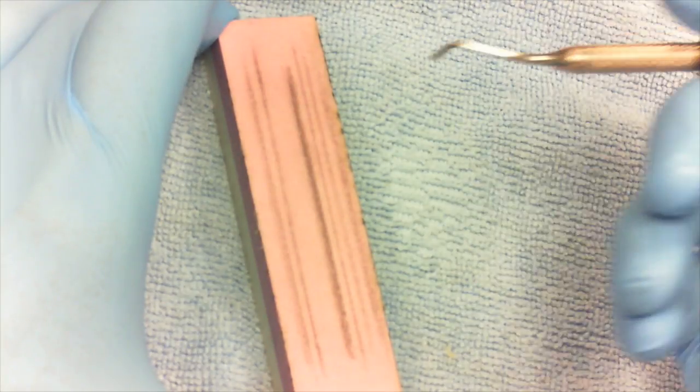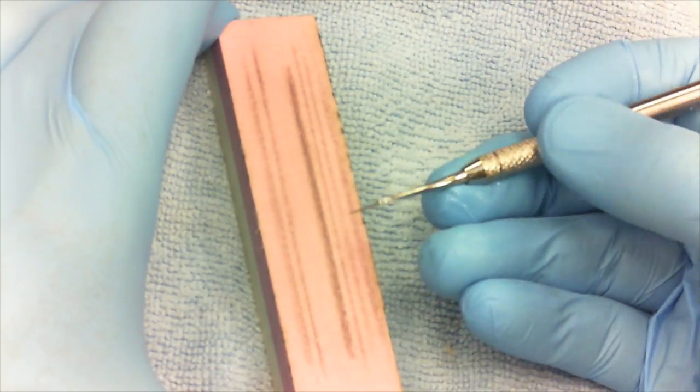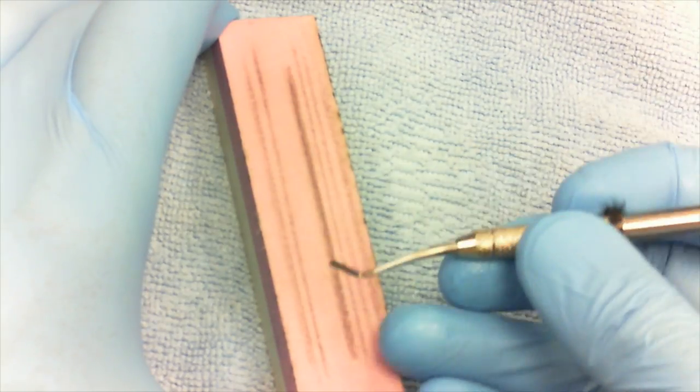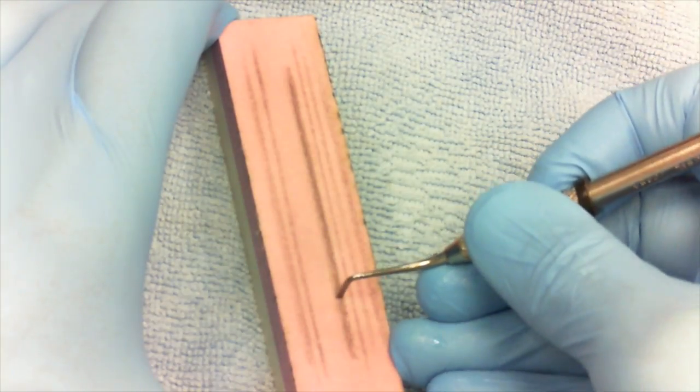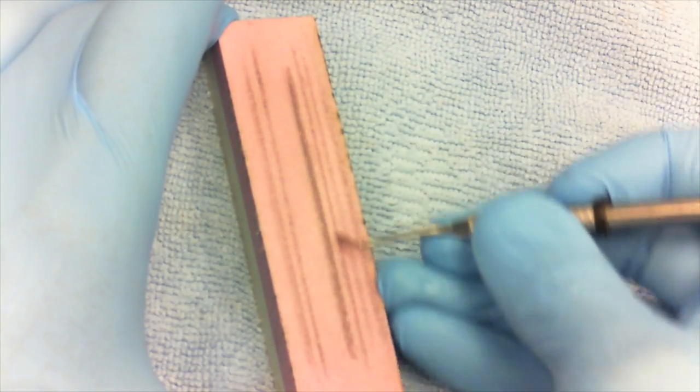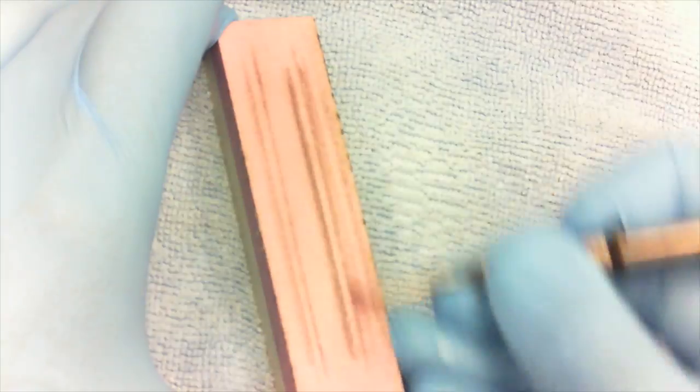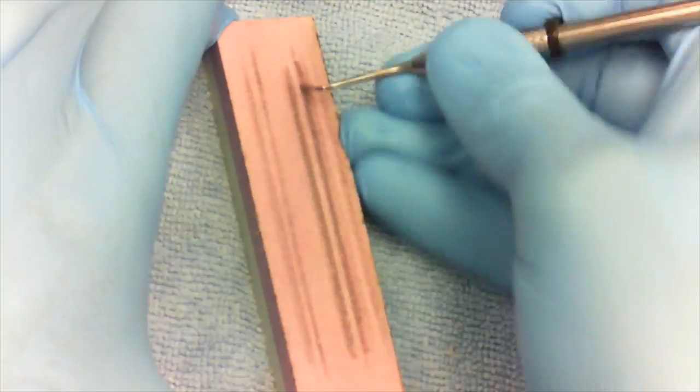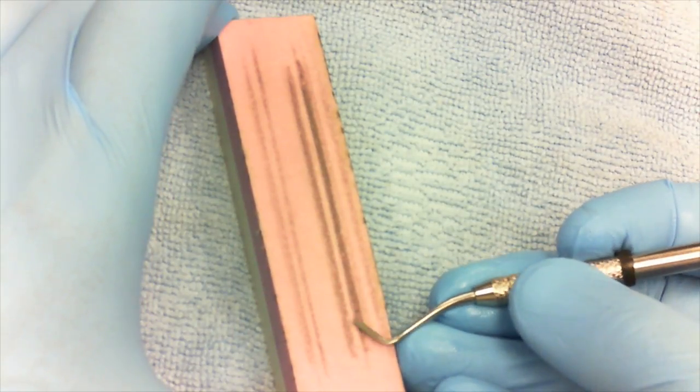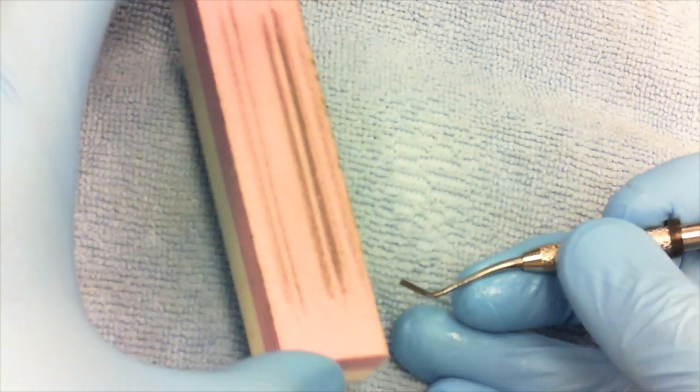When you're sharpening the other side, once again identify where the bevel is. We're going to hold the instrument up, tip it back 45 degrees, and now we're going to be doing a push stroke.